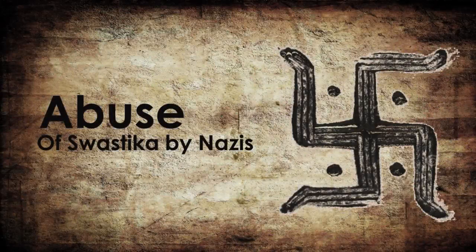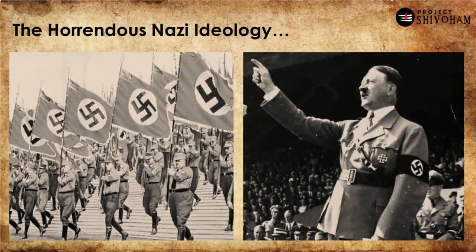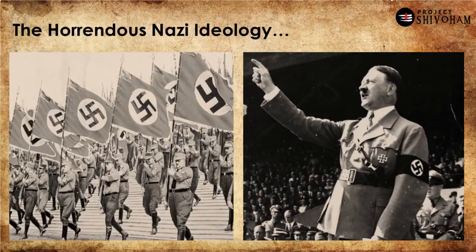And that brings us to the second chapter — the abuse of Swastika by the Nazis. I want to talk as little as possible about the horrendous Nazi ideology. Just for those who do not know: Adolf Hitler was a barbaric dictator in Germany whose ideology held that certain races of people are pure and certain are impure. He persecuted Jews in millions, which is often called the Holocaust. The Swastika was abused by the Nazis as their emblem. I just want to focus on one very important data point regarding this abuse.